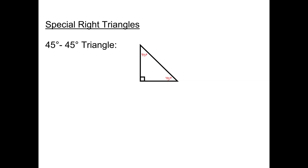In order to do that, I'm going to have to have some side lengths. Because we have a 45-45 right triangle, that means it's isosceles, and the opposite sides from each angle have to be the same length. So I can put whatever I want in there. For simplicity's sake, I'll say this side is 1 and this side is 1.